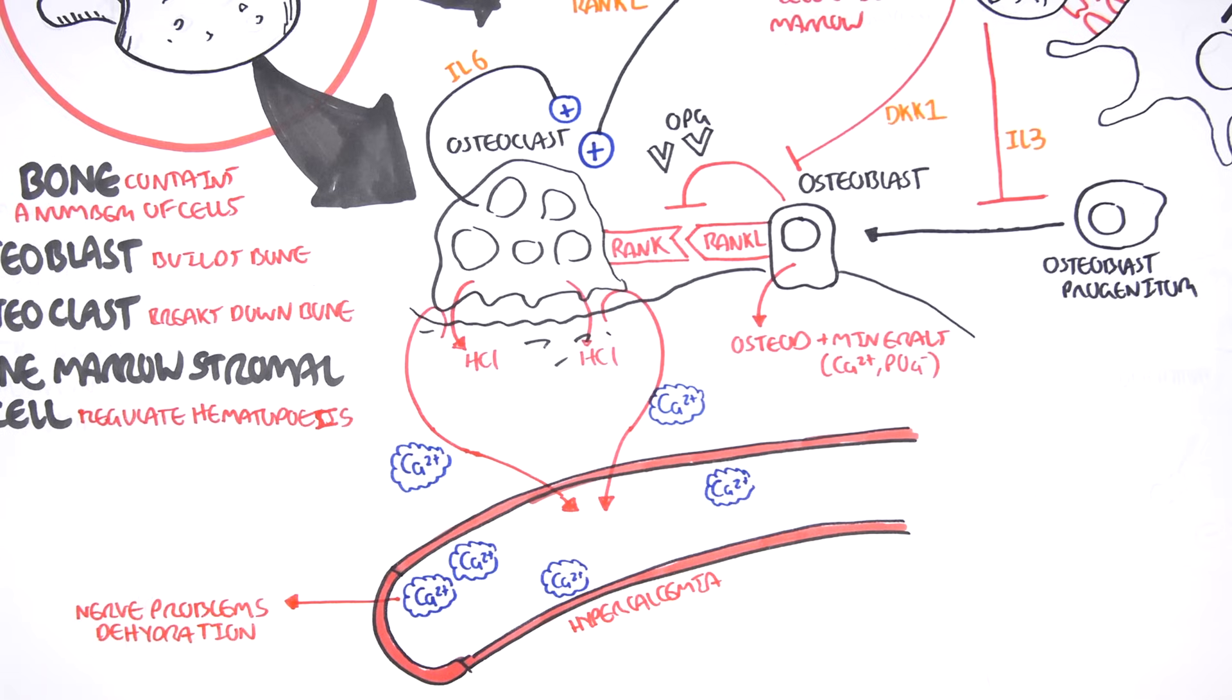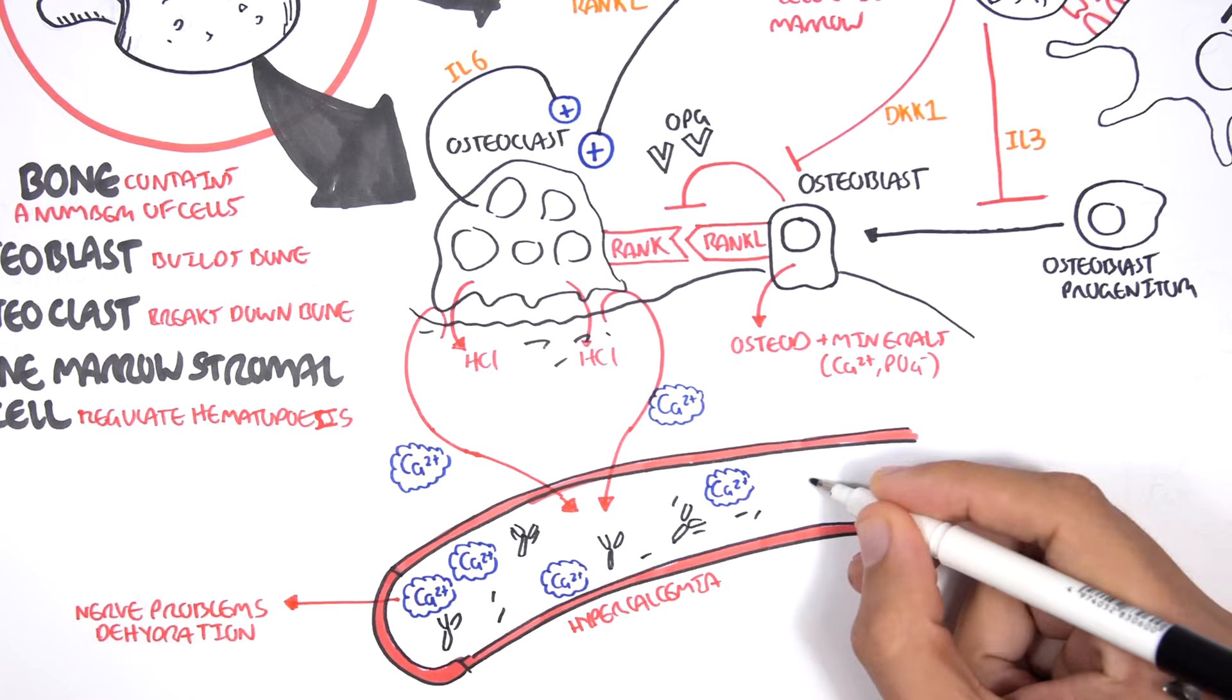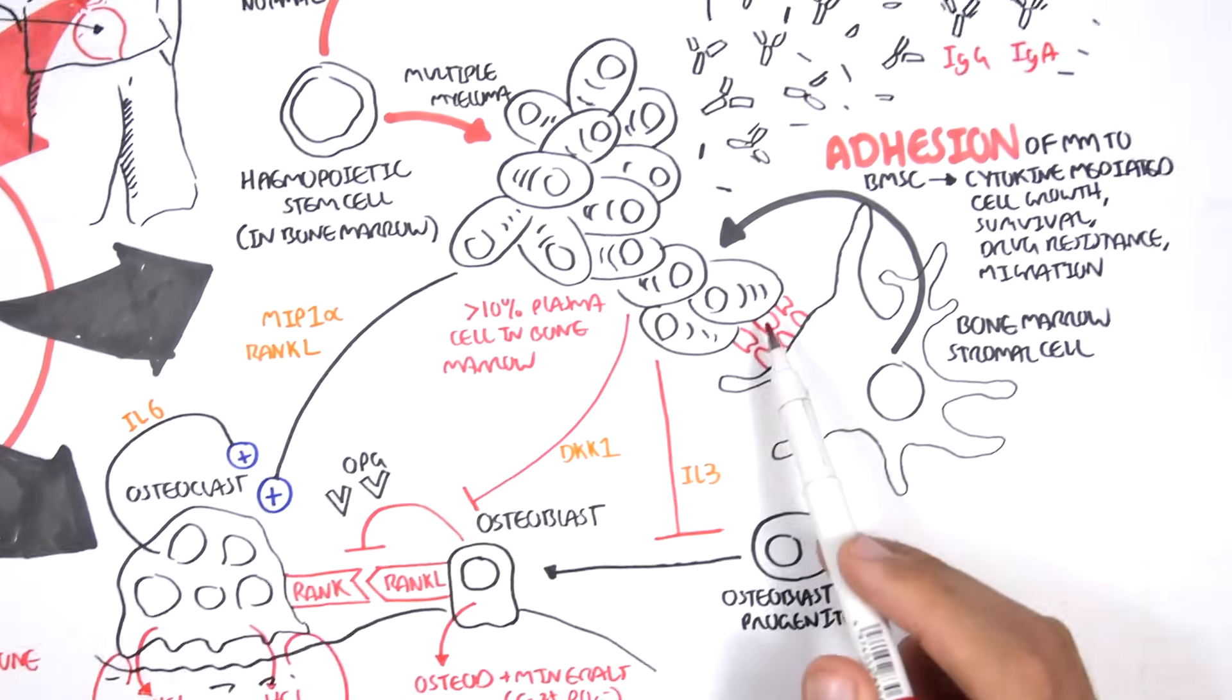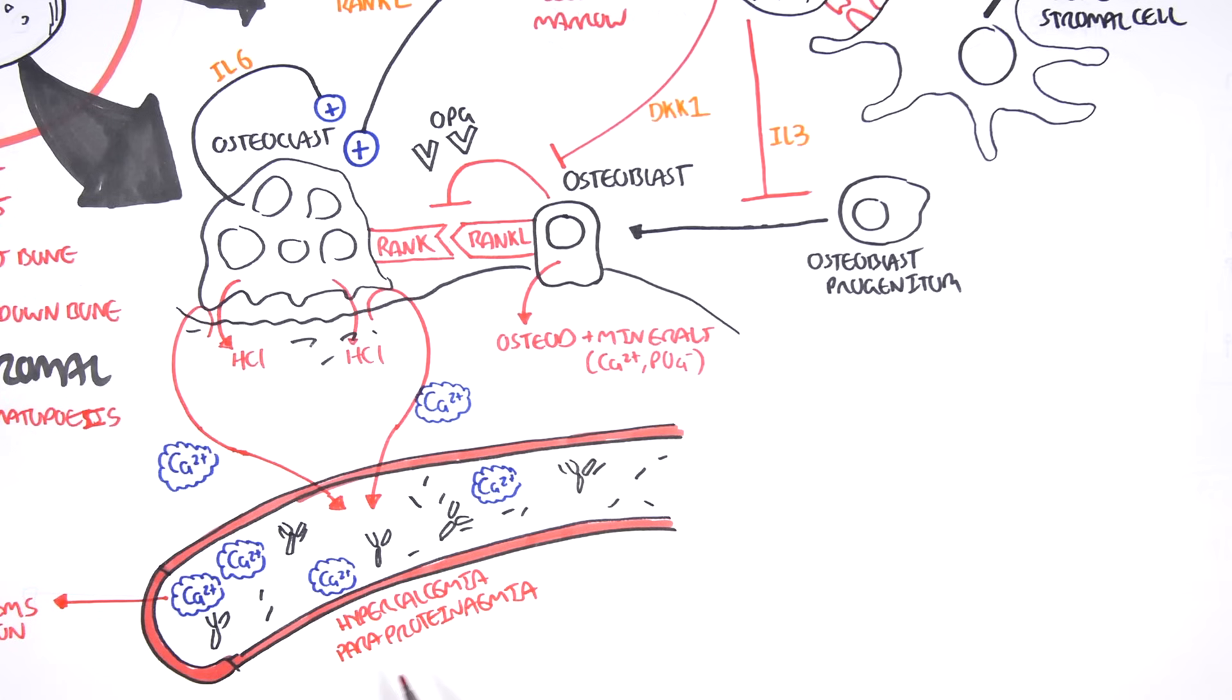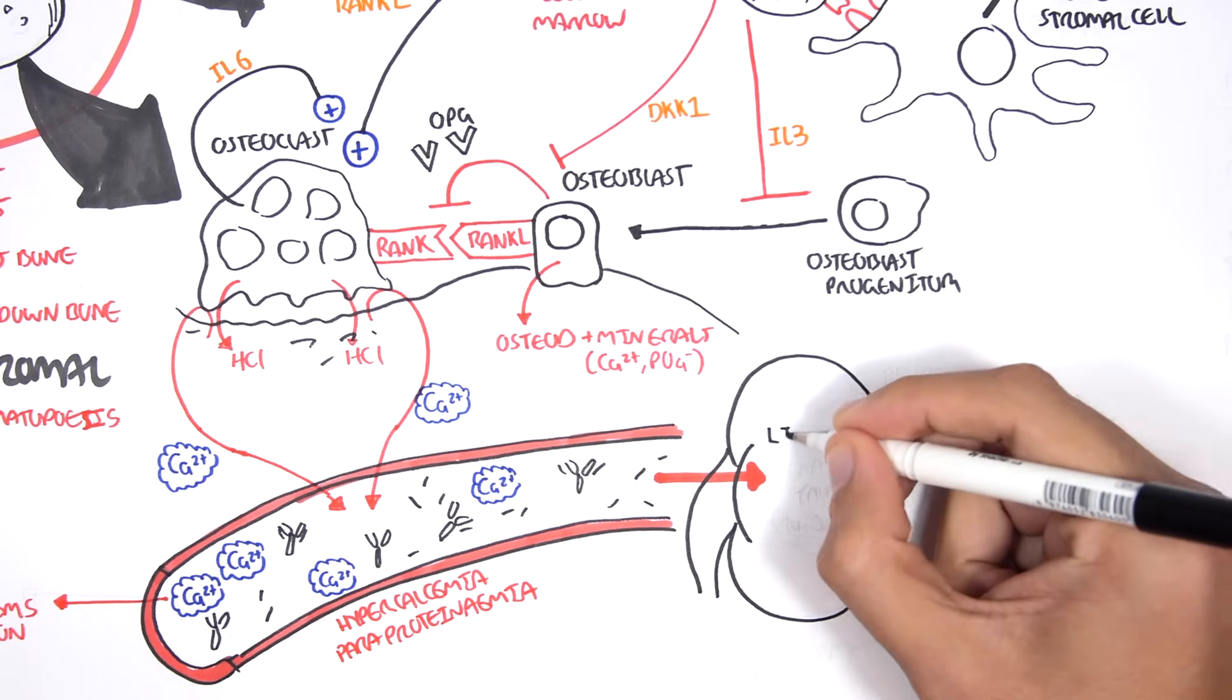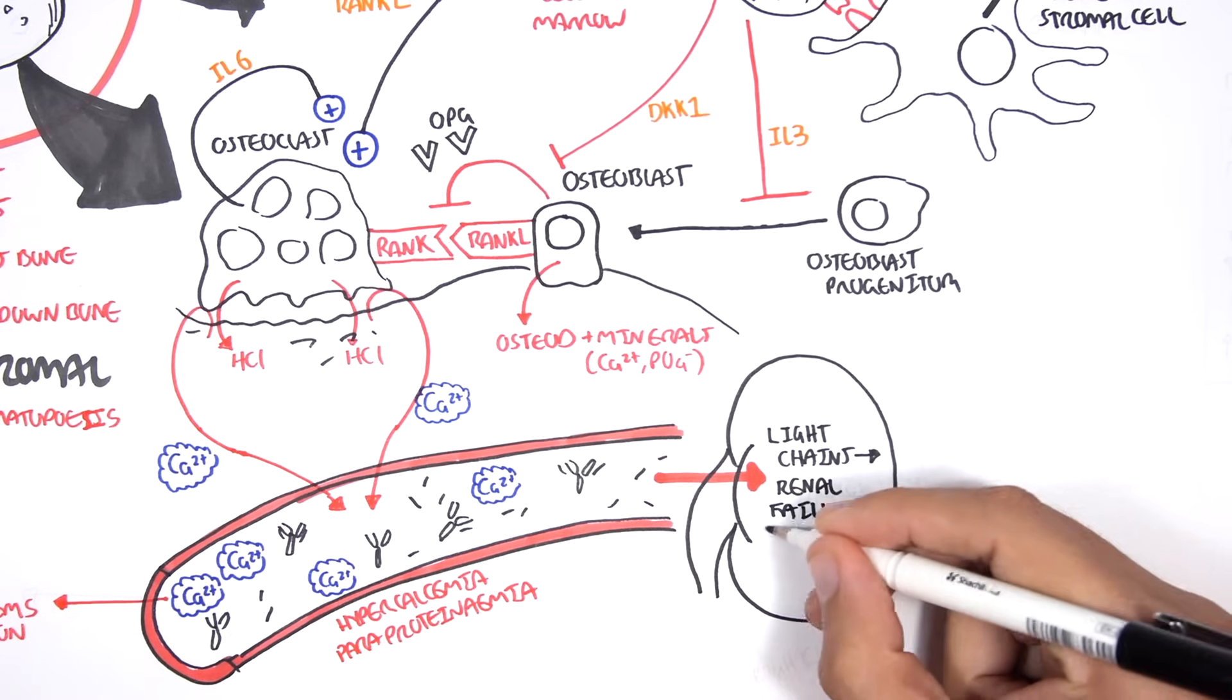In the blood there is also paraproteinemia, with bits of light chains floating around. The paraproteinemia has some bad effects. Remember the paraproteins are being produced by the multiple myeloma cells. These light chains, these paraproteins are small enough to get filtered through the glomerulus of the kidneys and can lead to renal failure in 20-30% of cases.